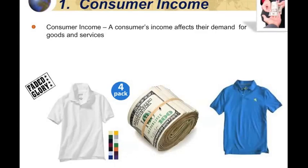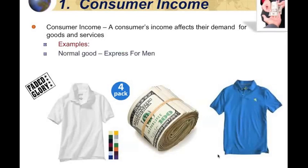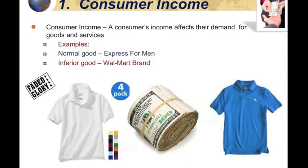I've also had times in my life where my income decreased. During those times, I would be able to buy less name brand stuff and have to buy more generic brand. In economics, we call the goods we'll buy when our income increases a normal good — Express for Men clothing would be a normal good. We call the things we would not buy if our income goes up an inferior good — in this case, the Walmart brand.